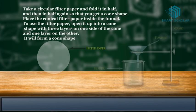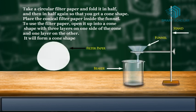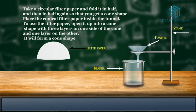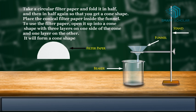Take a circular filter paper and fold it in half, and then in half again so that you get a cone shape. Place the conical filter inside the funnel.